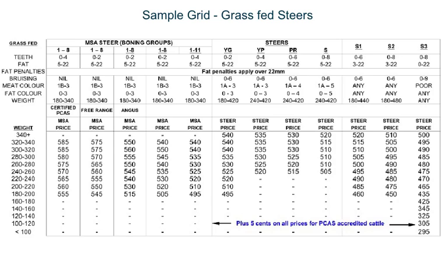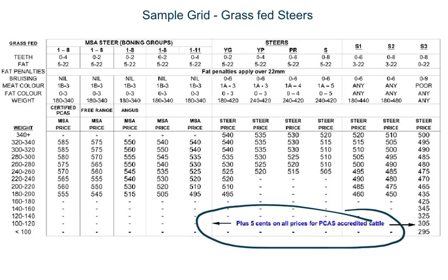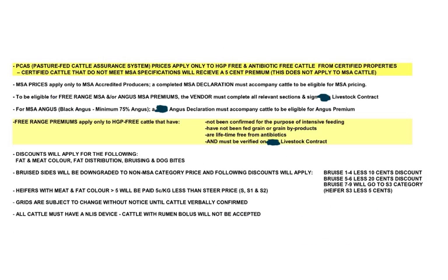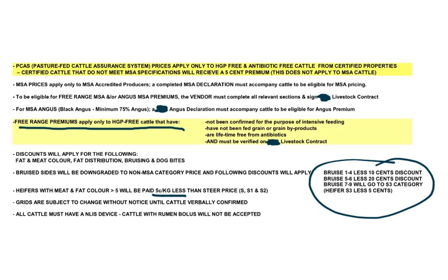This is a sample over-the-hooks grid for an abattoir. You receive $0.05 per kg on all prices for pasture accreditation, and if certified PCAS, probably $0.10 above the free-range price. Being Angus breed alone earns $0.10 per kg more than other breeds. There are significant discounts for bruising, and heifers are paid $0.05 per kg less generally. Free-range premiums apply only to hormone growth promoter-free cattle, and MSA Angus cattle must be a minimum of 75% Angus and sign the contract.